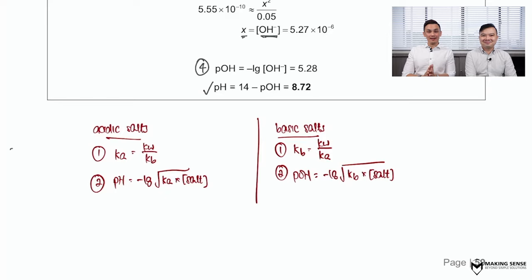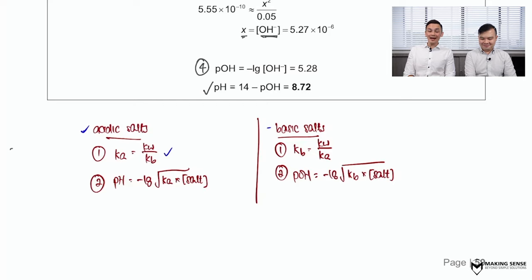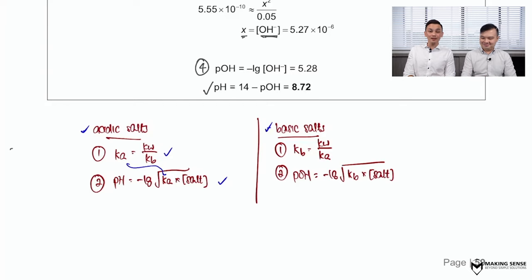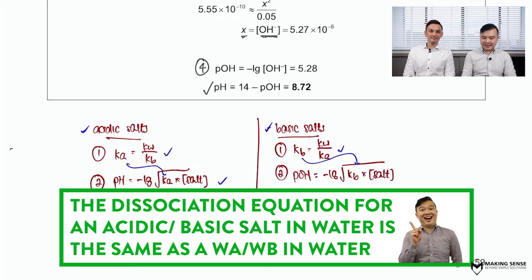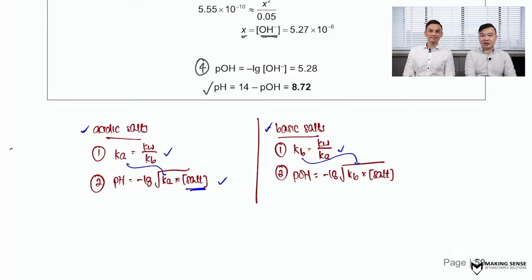There is a shortcut to bypass the ICE table — everything is summarized from last week. First, always identify whether you are working with an acidic salt or a basic salt. For an acidic salt, find Ka, which is Kw divided by Kb, and apply the formula: pH = −log(√(Ka × [salt])). For a basic salt, find the Kb expression and then find pOH using the corresponding formula. These formulas are very similar to those for weak acids or bases — the only difference is you use the concentration of the salt instead of the acid.